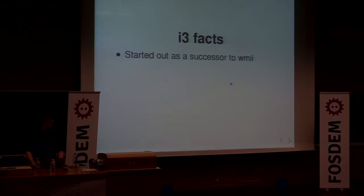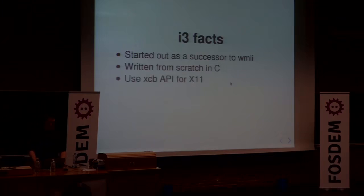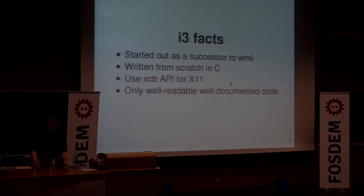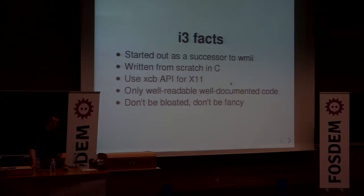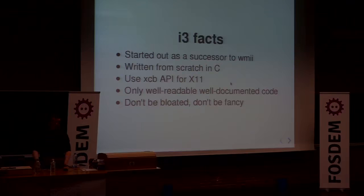Some i3 facts. First, it started out as a successor of WM2. It's written from scratch in C. It uses XCB as an API for the X server. One of its core principles is only accepting well-readable and well-documented code. Another core principle — the most important to me — is don't be bloated, don't be fancy. This can trigger passionate discussions on GitHub when people want their PR or feature requests accepted and sometimes they're not. But it's a good principle because when you upgrade i3, it's going to remain the same cool i3 we like.